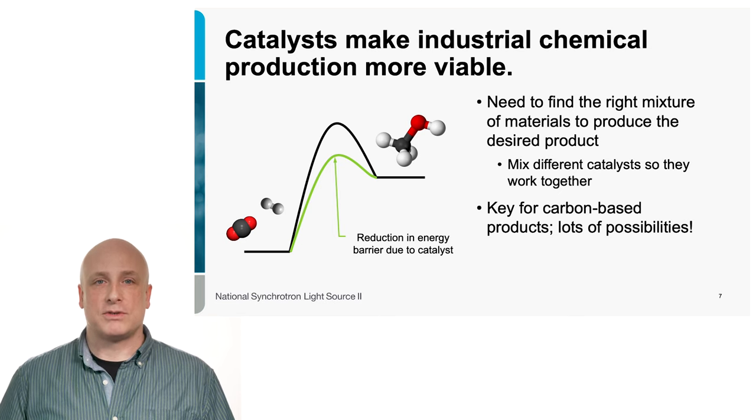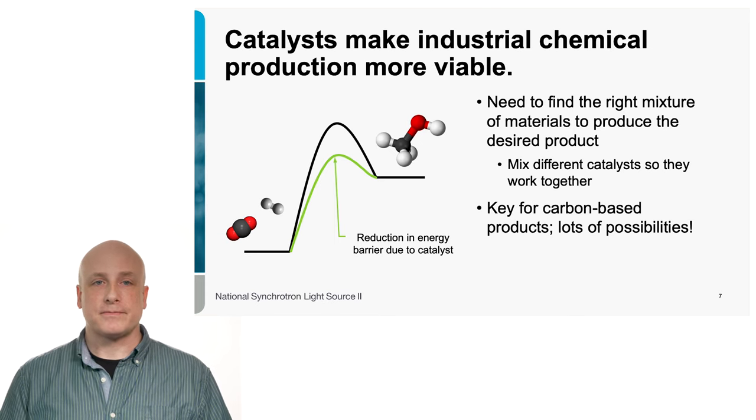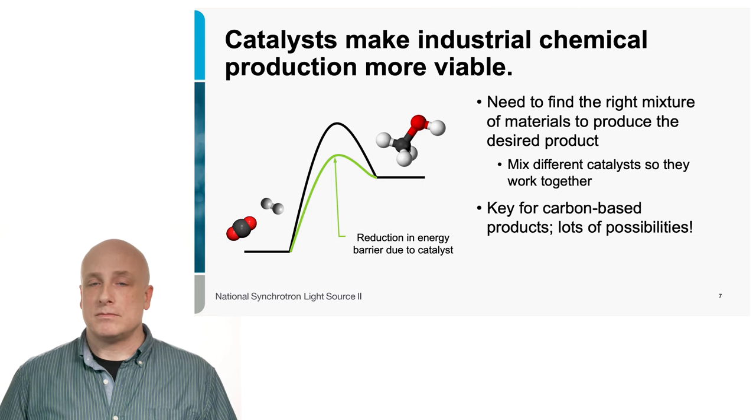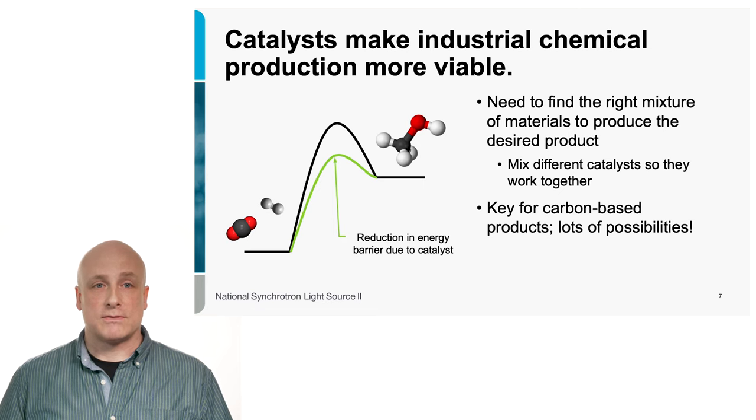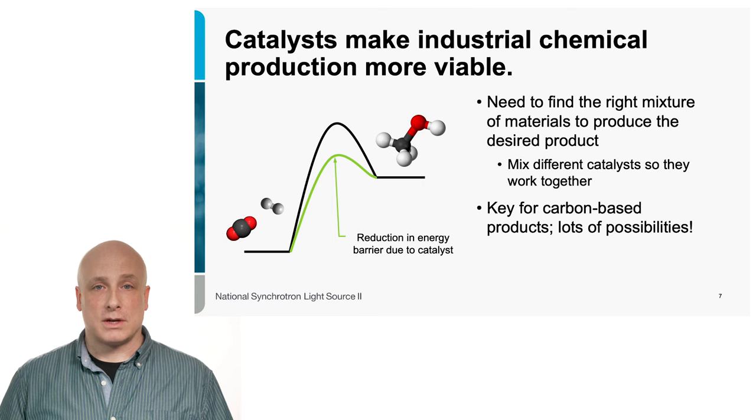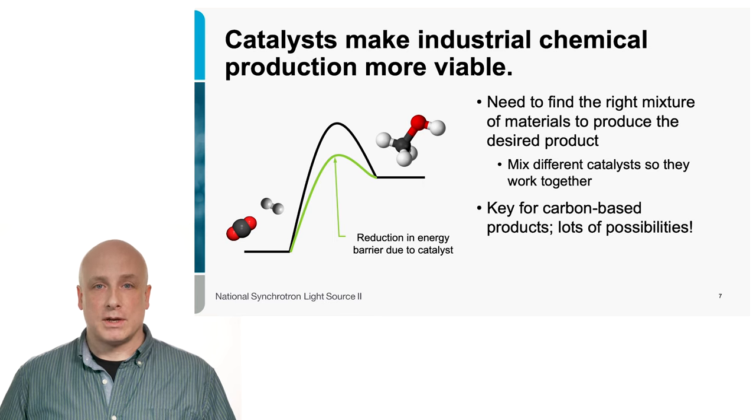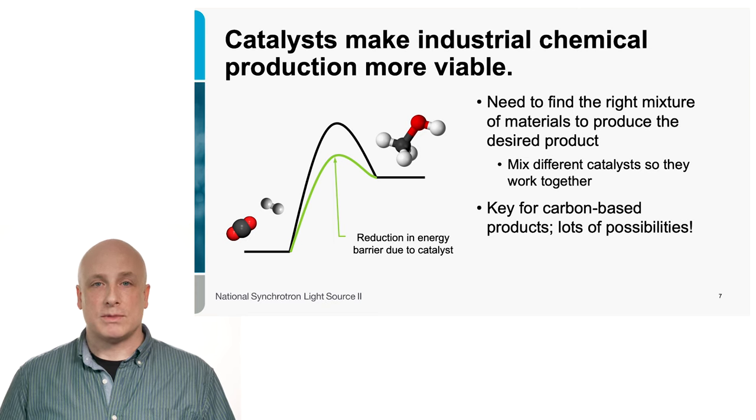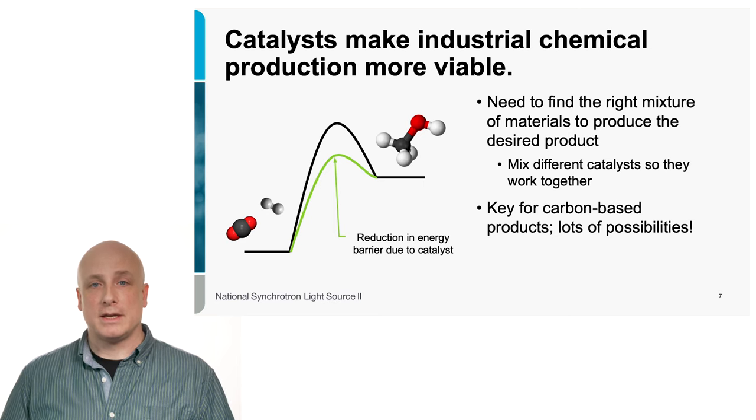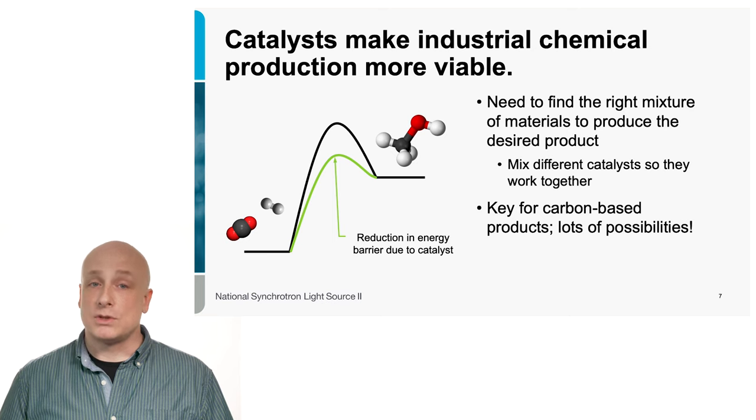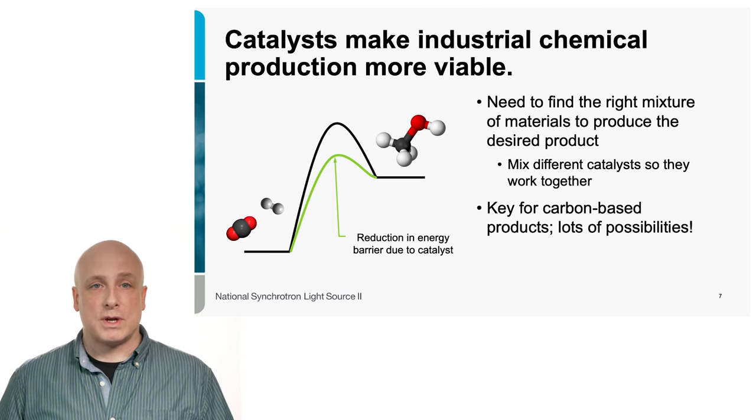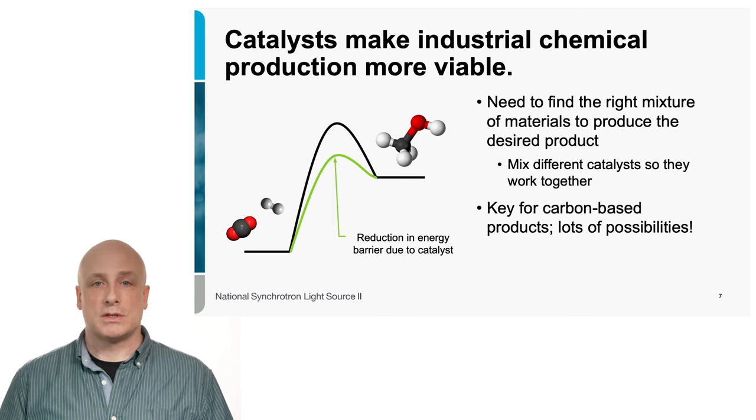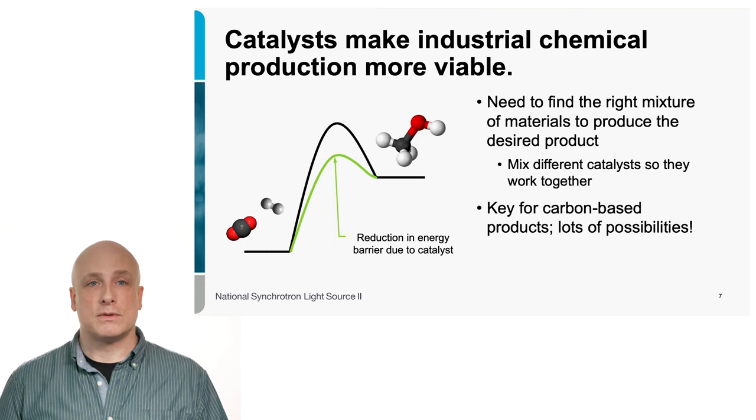We need to find the right mixture of materials, however, to produce the desired product. No catalyst interacts with all molecules the same way. For example, platinum, which is an extremely good catalyst for a lot of different things, does not interact with hydrogen and carbon dioxide the same way. So, in order to get what you want, often we have to mix different catalysts together in order for them to basically aid each other. And again, this is really key for carbon-based products because there's so many different ways that they can combine. In this particular case, if we want to get methanol, we don't want methane, we don't want carbon dioxide, we don't want water, we just want the methanol. So, that is the point of the research.